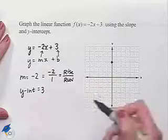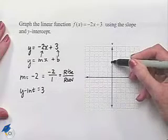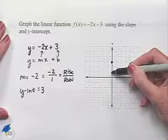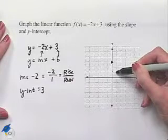A rise of negative 2 means that we're going to start at the y-intercept and move 2 units down. The run of 1 means we move from there 1 unit to the right.